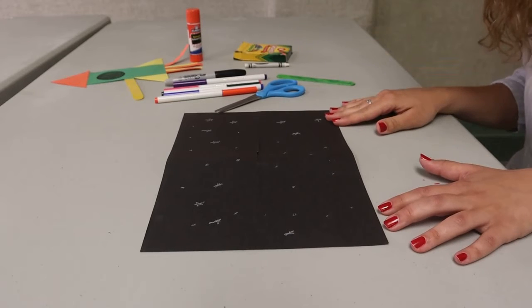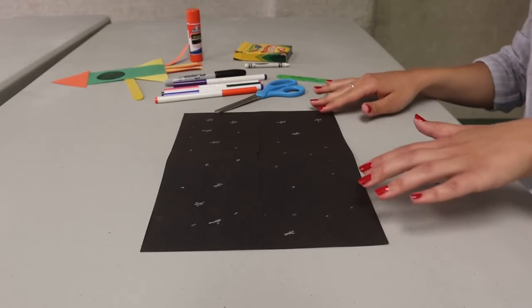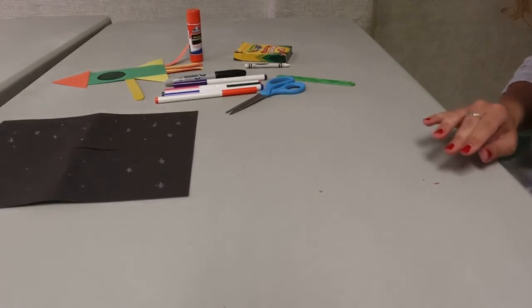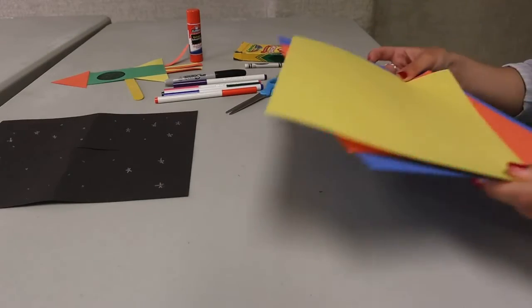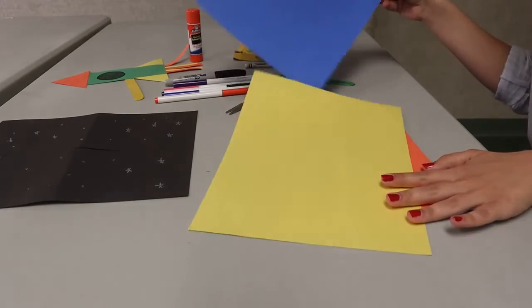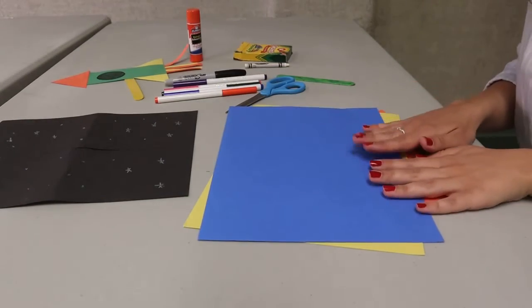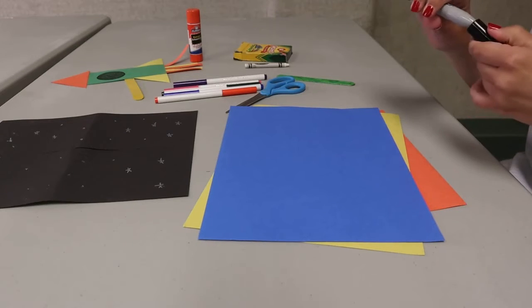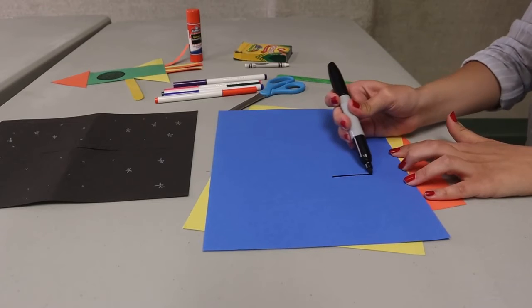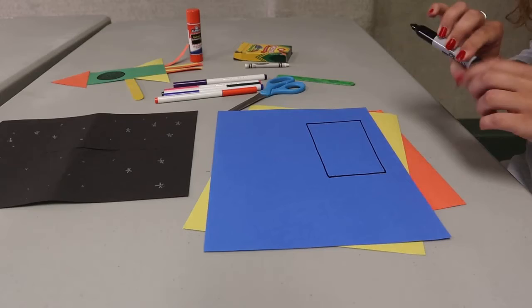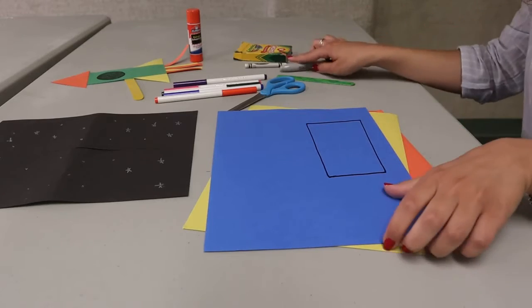So once you put as many stars as you want, we are going to make our spaceship. I'm going to put my black piece of paper on the side, and I am going to take the colors of my spaceship. I want my spaceship to be blue. So I'm going to take a blue piece of paper and I am going to draw a rectangle onto my blue piece of paper. And I'm going to cut that rectangle out.